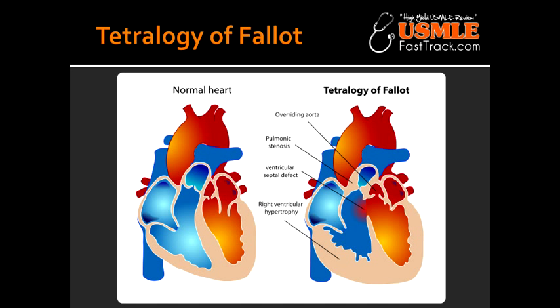Describe the tet spells of Tetralogy of Fallot, as well as why the VSD in Tetralogy of Fallot produces a right-to-left shunt instead of a left-to-right shunt. Early cyanosis and tet spells are caused by right-to-left shunt across the VSD. In conditions where there is only a VSD, the flow is usually left-to-right, which is acyanotic. But in Tetralogy, pulmonary stenosis forces right-to-left cyanotic flow and causes right ventricular hypertrophy.